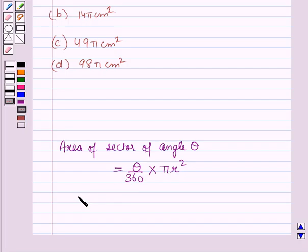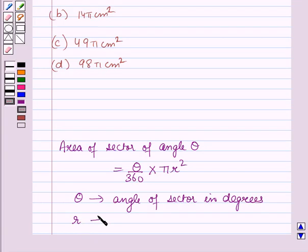Where θ is the angle of the sector in degrees and r is the radius of the circle.